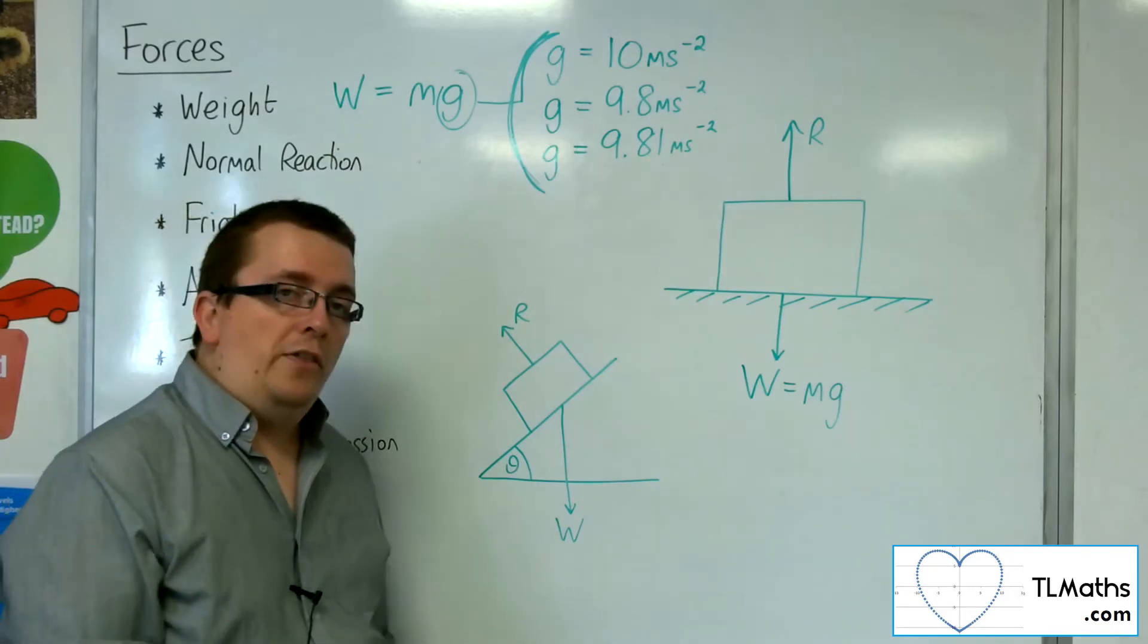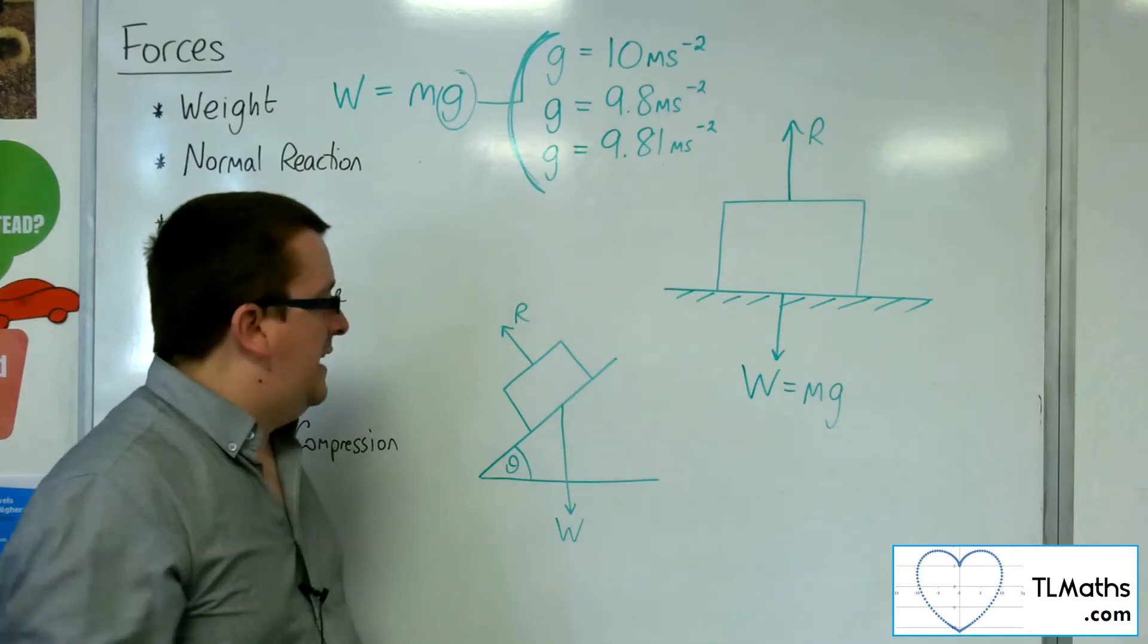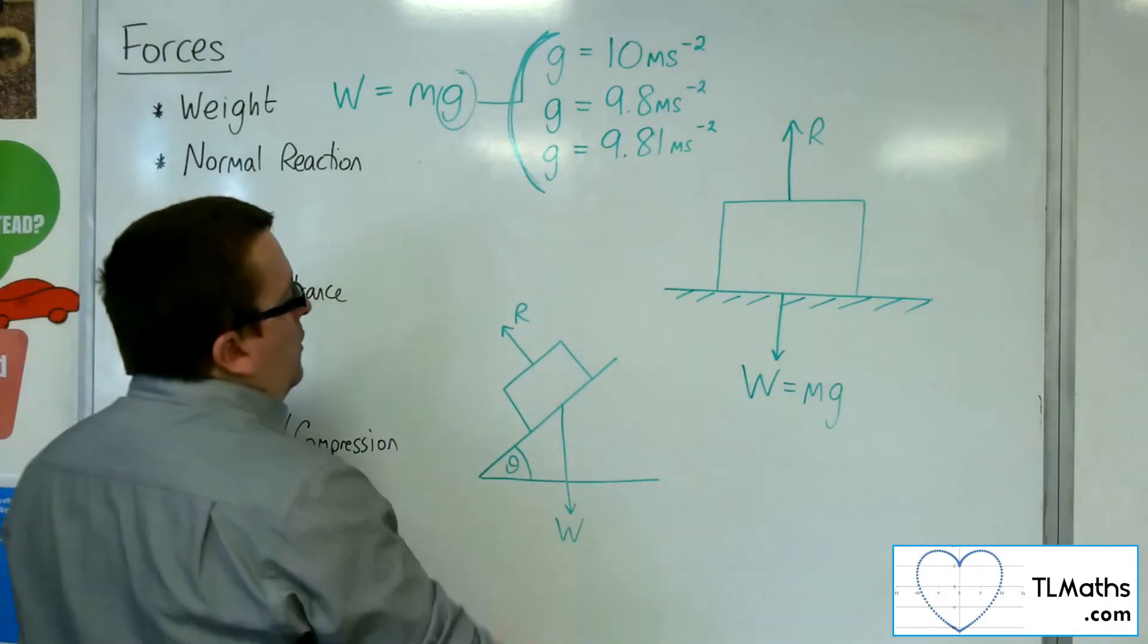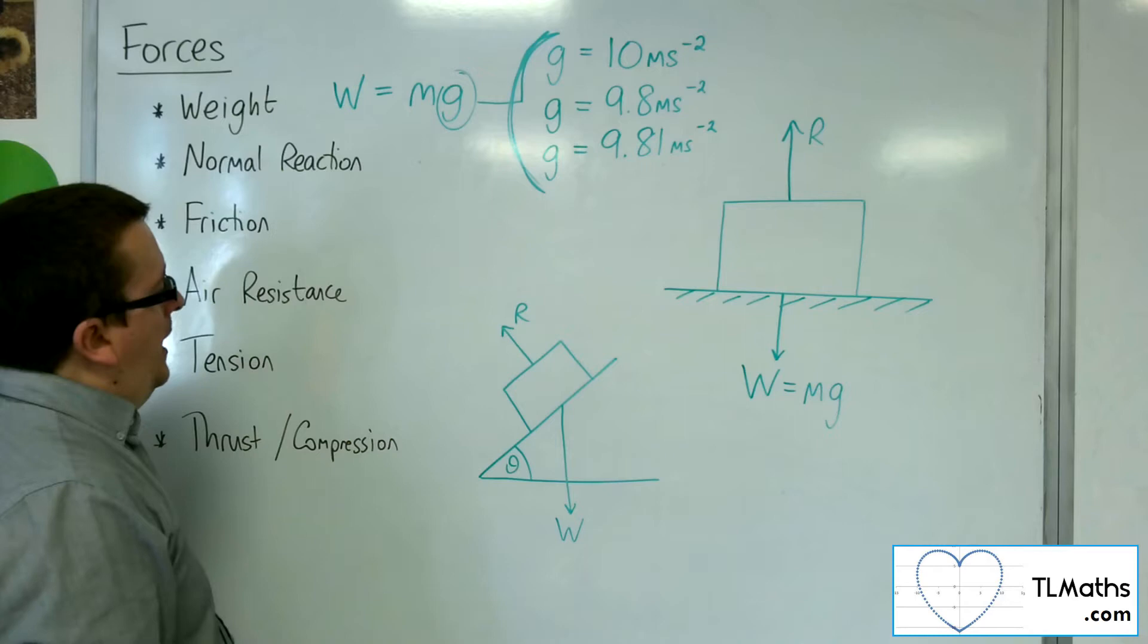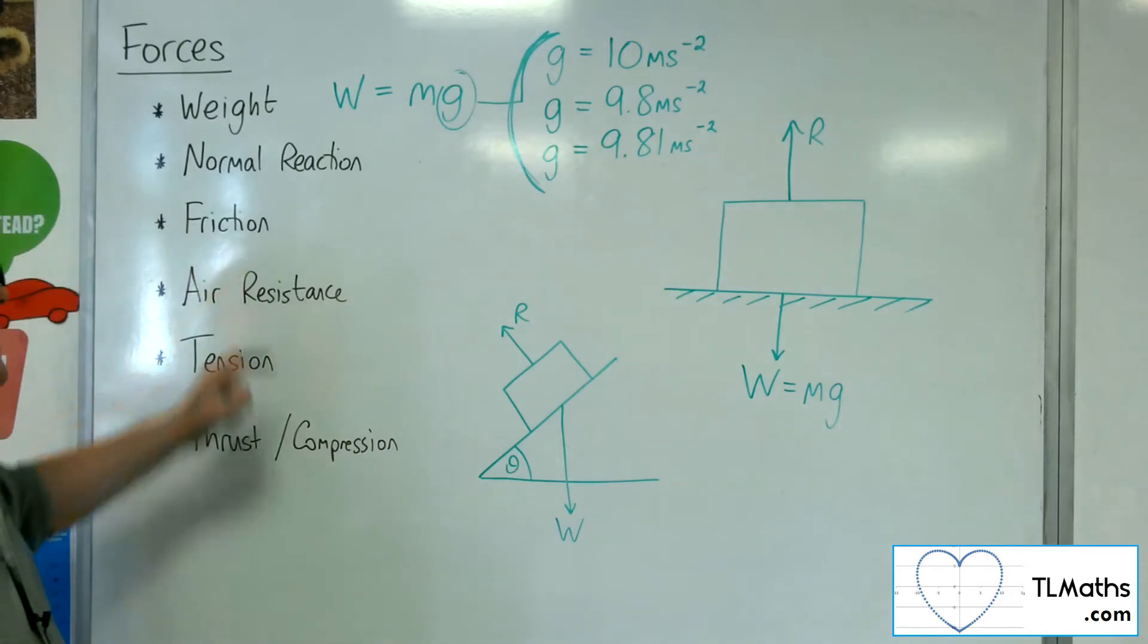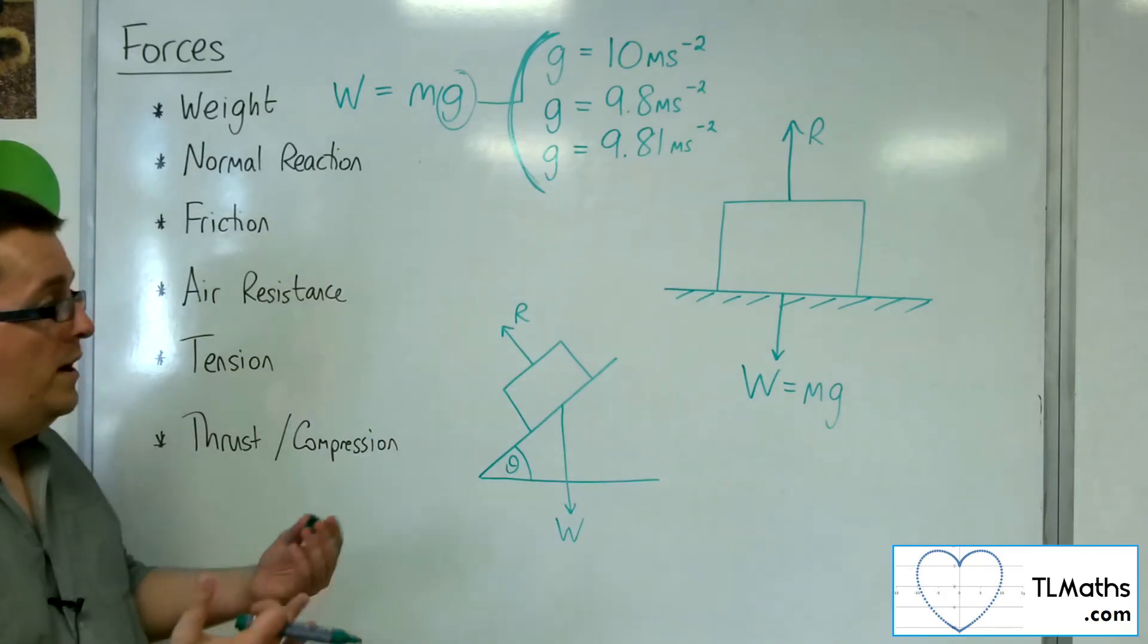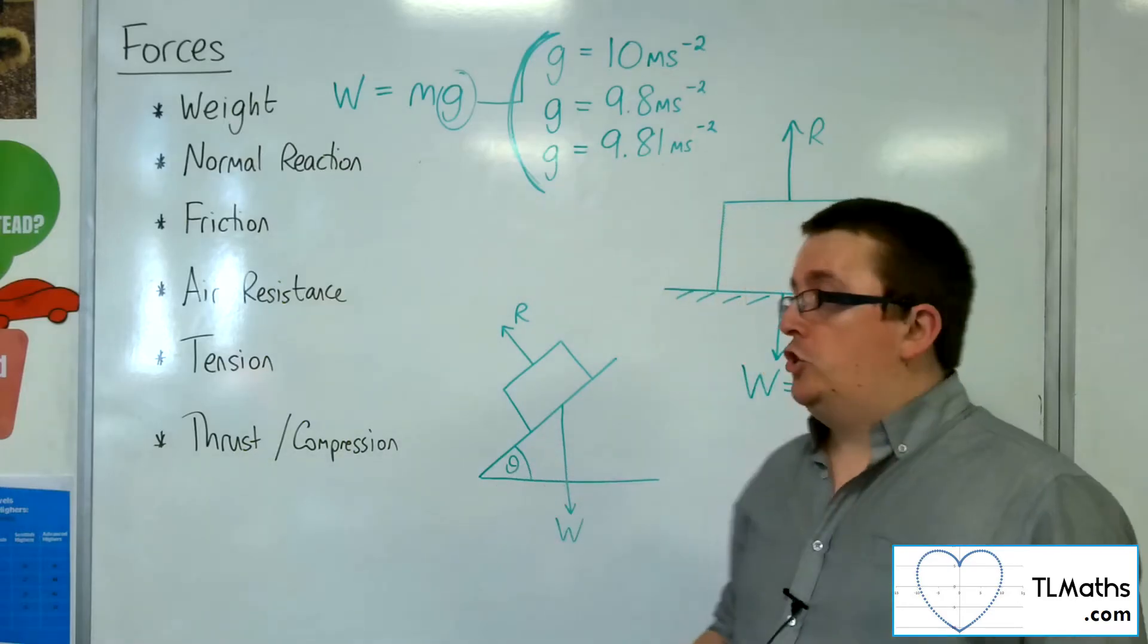What you can start to imagine is that if I had this box on this slope, then if there was nothing to stop it from slipping down, then that's exactly what would happen. Weight, its weight would pull the box down the slope, unless there is something in the way. And that is friction.